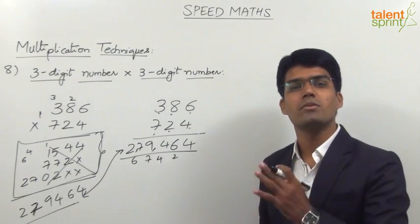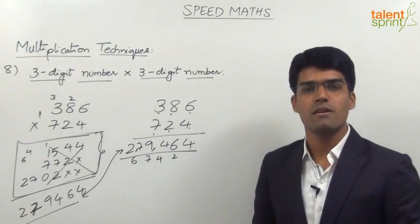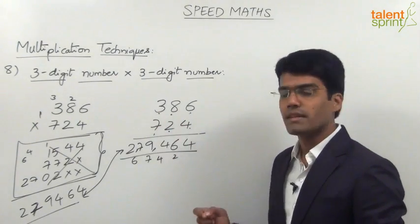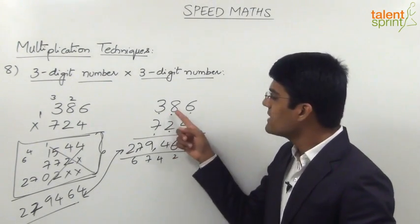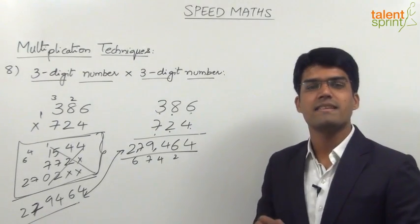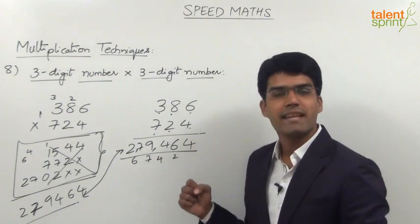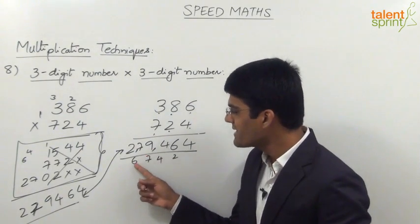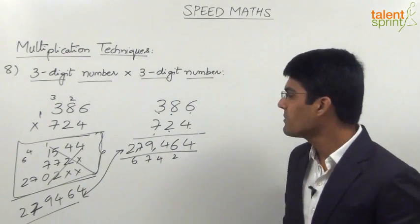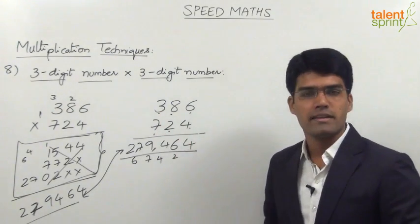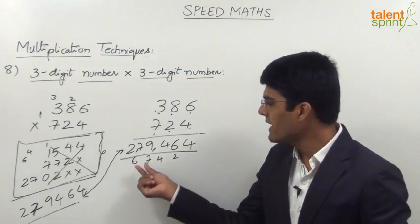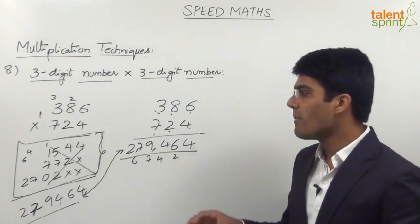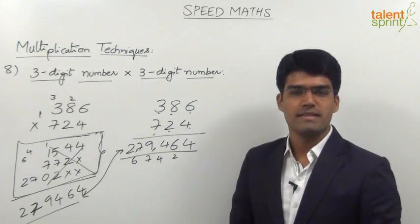70 plus carry 4 is 74, so take 4 in the answer and carry 7. The fourth step is cross multiplication of tens places and hundreds places: 3 into 2 is 6, 8 into 7 is 56; 56 plus 6 is 62, plus carry 7 gives 69. Take 9 in the answer and carry 6. Last step: multiplication of hundreds places — 3 into 7 is 21, plus carry 6 gives 27.